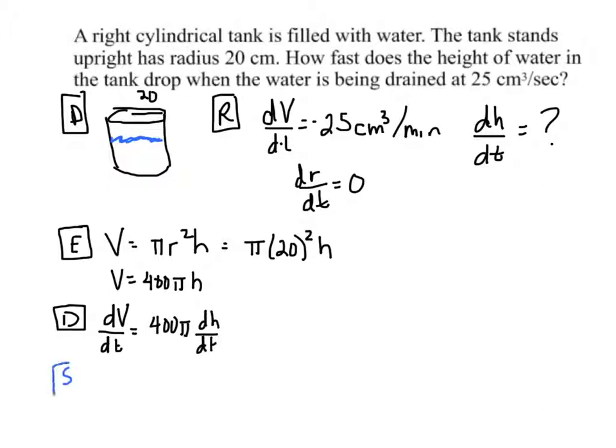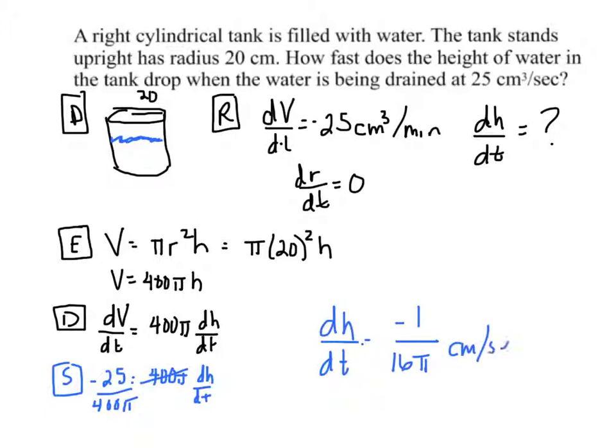Substitute and solve. So, negative 25 equals 400 pi dh/dt. Divide both sides by 400 pi. So, dh/dt is negative 1 over 16 pi centimeters per second.